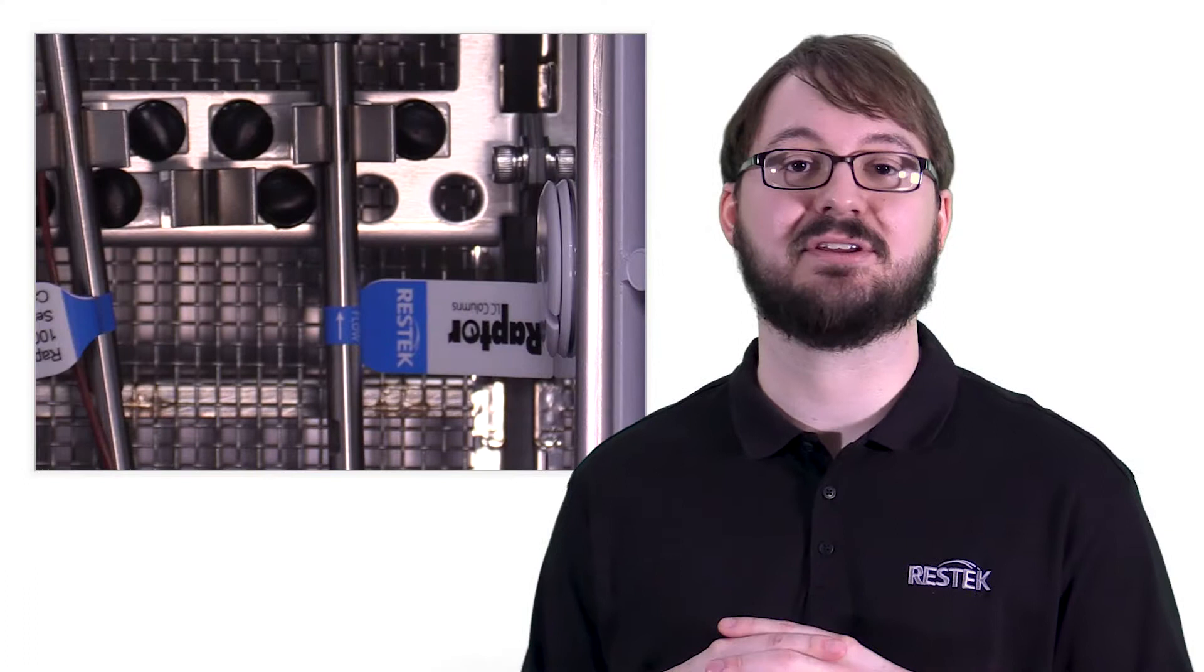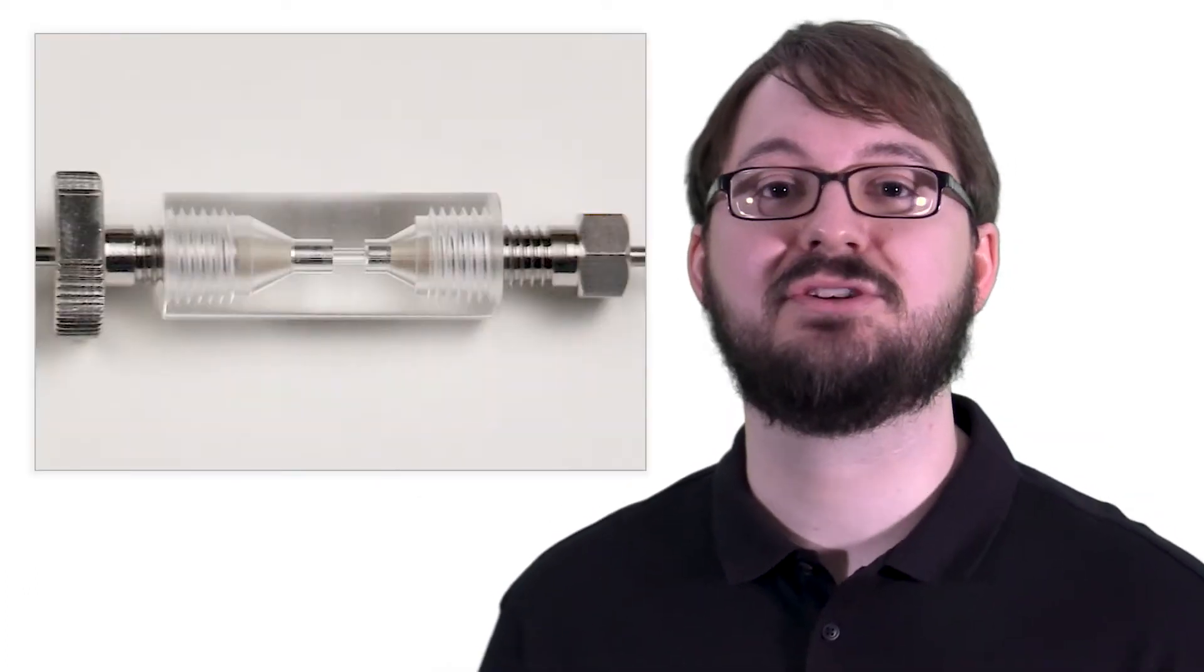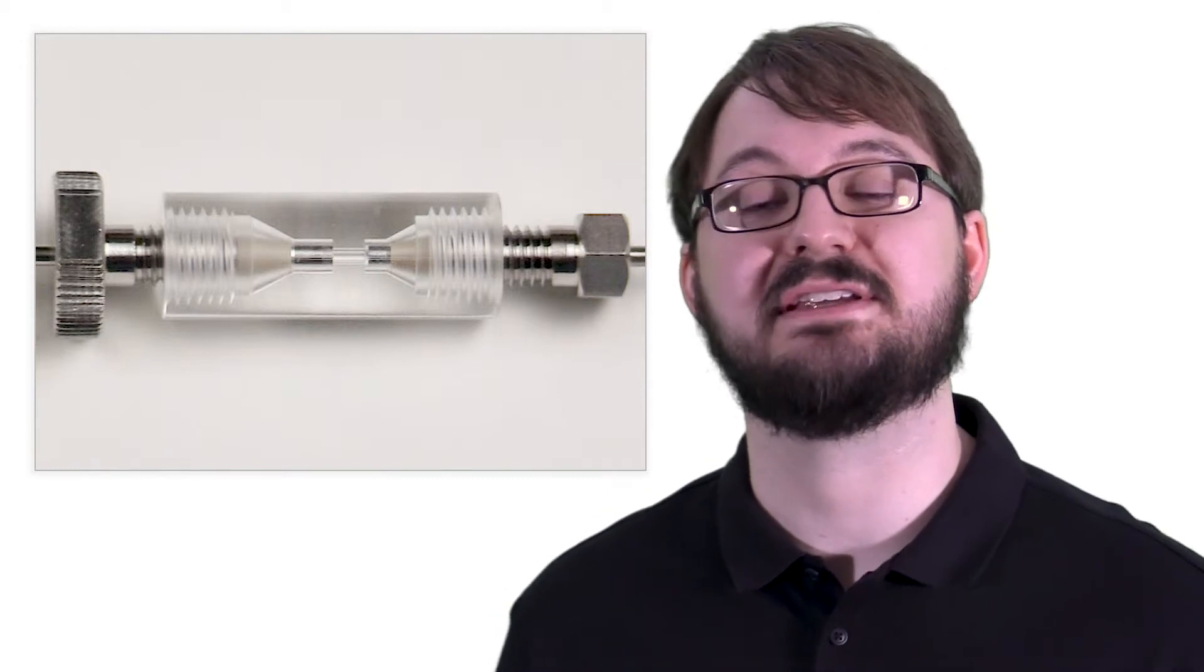Once you've chosen the appropriate fittings, be sure to check your column label for flow direction and insert your fitting into the column end. I like to push the tubing into the column as I'm securing the fitting. This ensures that a zero dead volume connection is made.